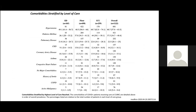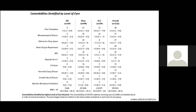Here are the comorbidities, sorted in decreasing order. Almost two-thirds have comorbidities. The most common are hypertension, diabetes, pulmonary disease, chronic kidney disease, coronary artery disease, asthma, and congestive heart failure — then less than 10% for the rest. This shows the same pattern we've seen in other places around the city, around the country, around the world. The second half of that table shows the lower-prevalence comorbidities.